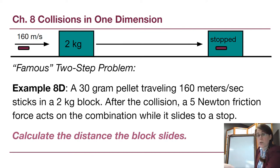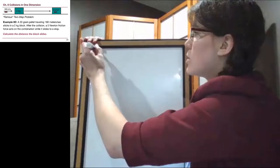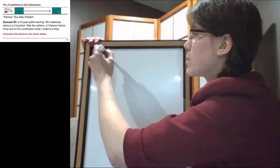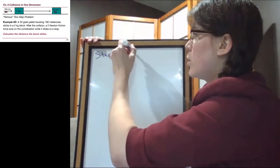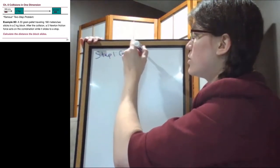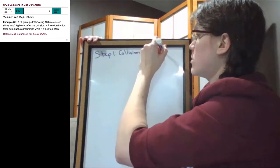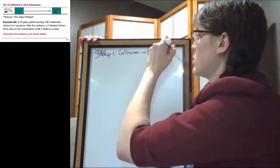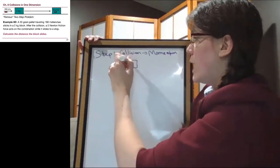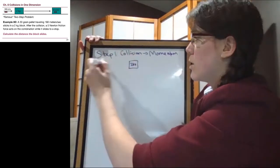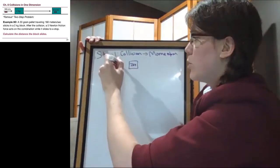So step one here is going to be the collision, which means we need to use momentum conservation. The only thing that we're worried about in step one is that we have the two kilogram block, we have the little mass moving.